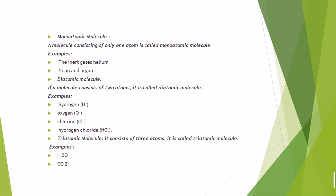Moving towards monoatomic molecules — as the name says, 'mono' means a single atom. A molecule consisting of only one atom is called a monoatomic molecule. Examples are the inert gases like helium (He), neon, and argon. These are noble gases that exist independently because they have a complete octet and are non-reactive.